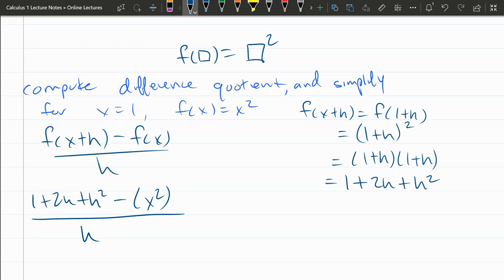So we have the difference quotient, we've plugged in and, uh-oh, what did I do wrong? Ah, x is supposed to be 1. So this should be f(1). Maybe I should have written that down. f(1) is 1 squared, which is 1. So that should just be 1 right there.